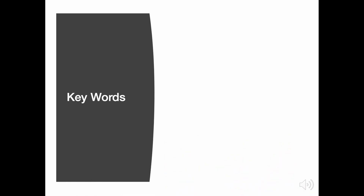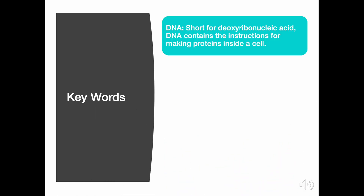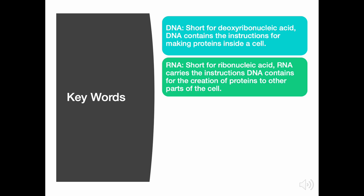Let's begin by exploring some key terms. DNA is short for deoxyribonucleic acid — this contains the instructions for making proteins inside a cell. RNA is short for ribonucleic acid; RNA carries the instructions that DNA contains for the creation of proteins to other parts of the cell.